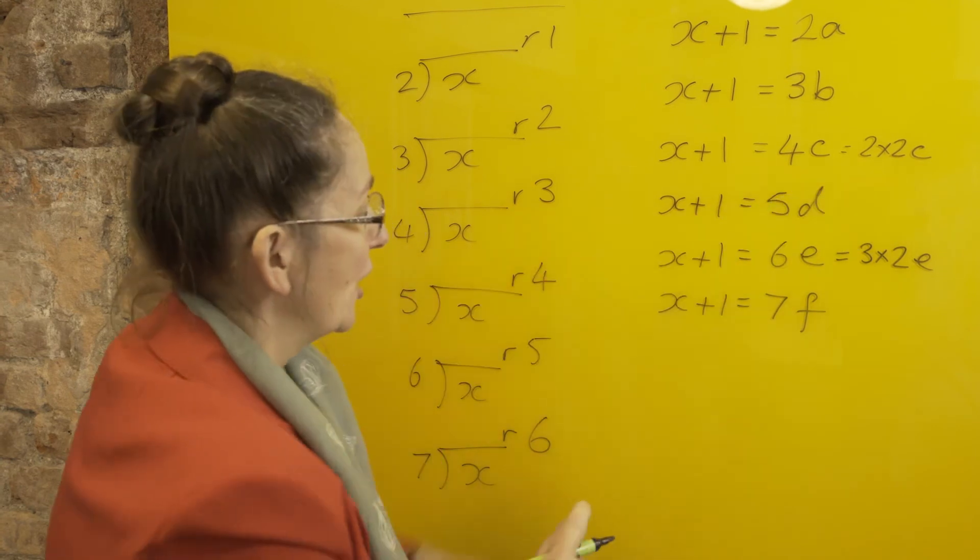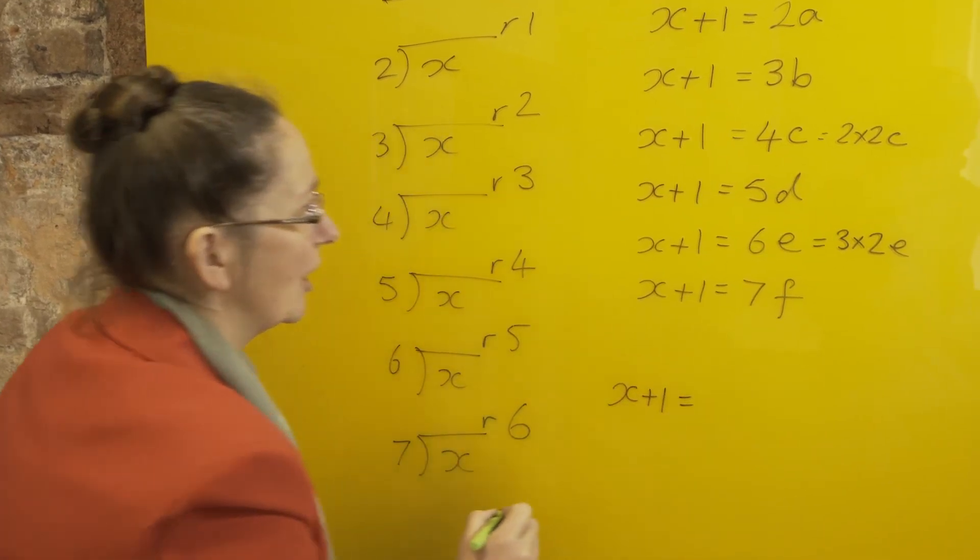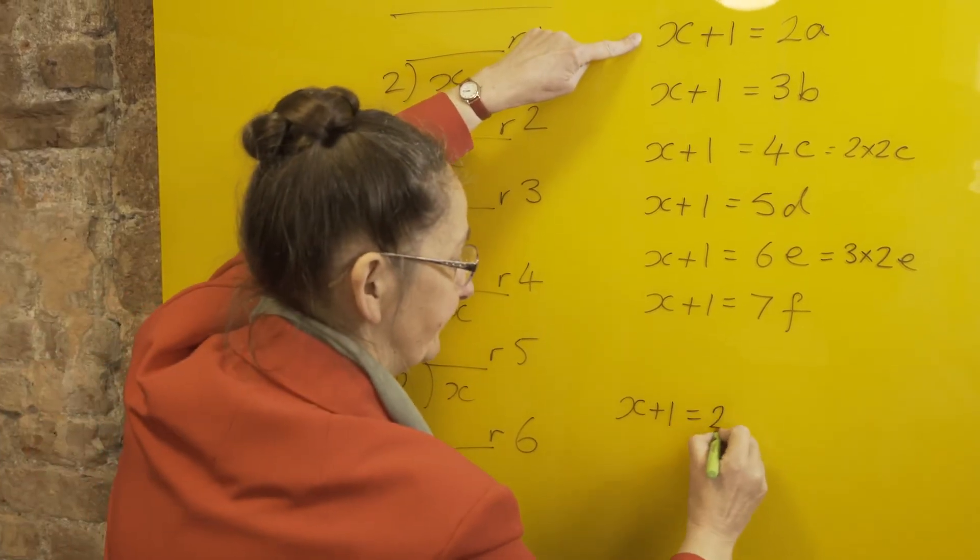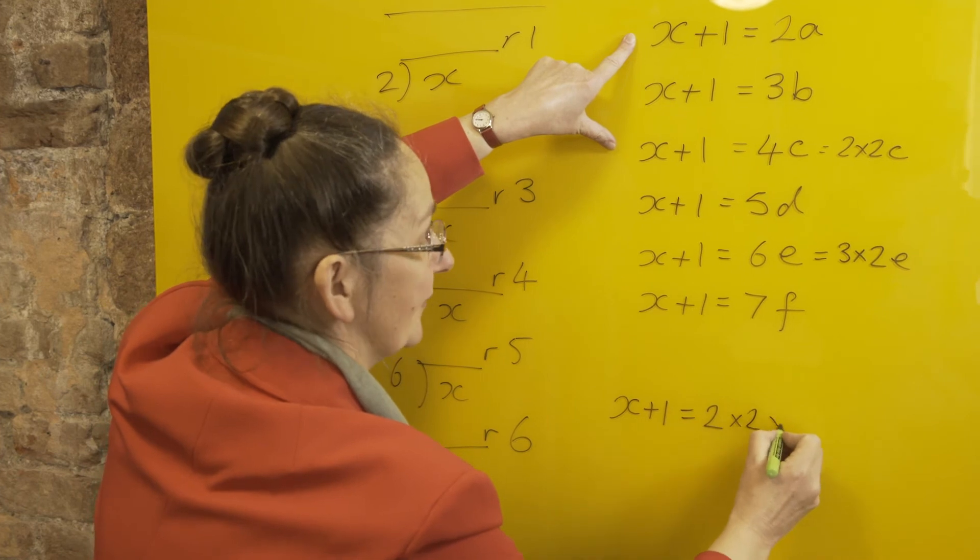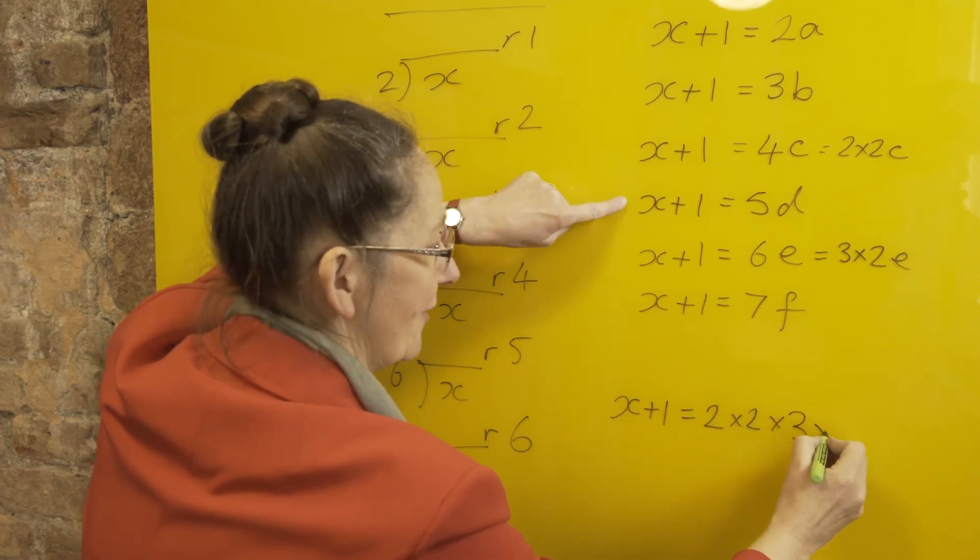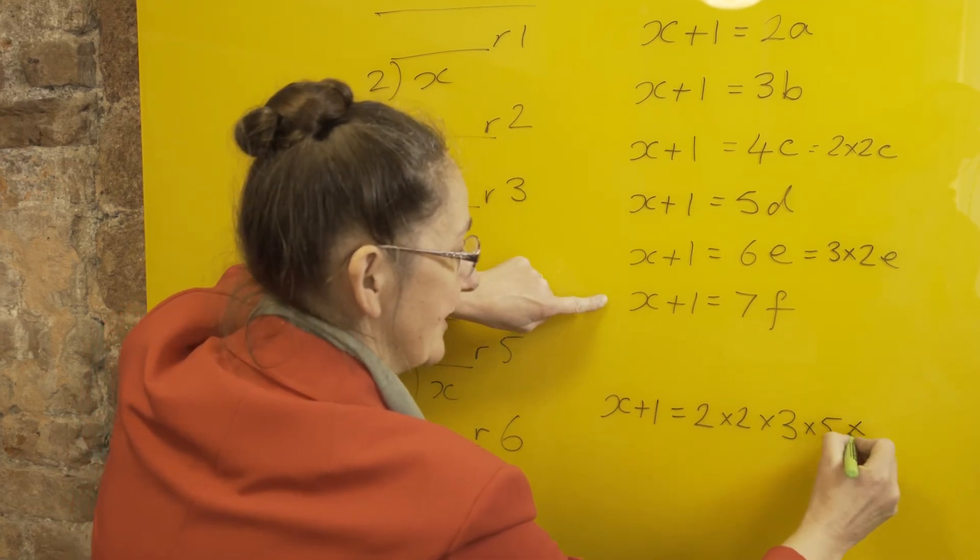So my x plus 1, to keep it as small as possible, has got to have a 2 in it. It's got to have another 2 in it to get that 4. It's got to have a 3 in it. It's got to have a 5 in it—I've got 3, I've got 2. It's got to have a 7.